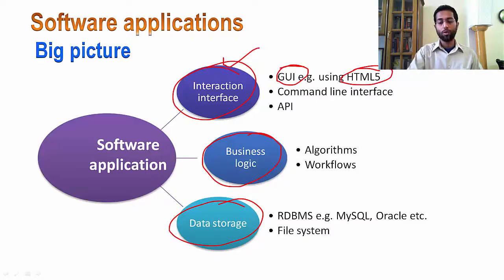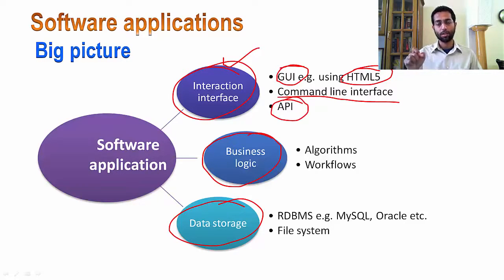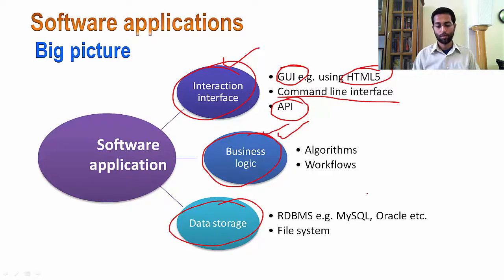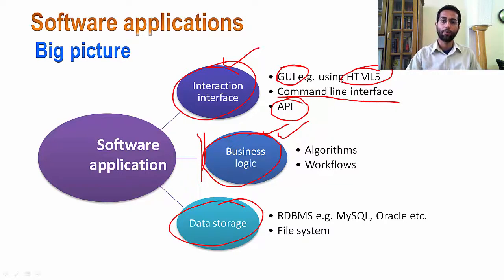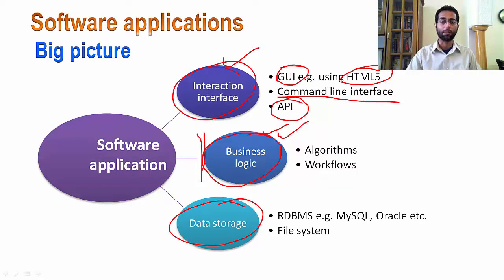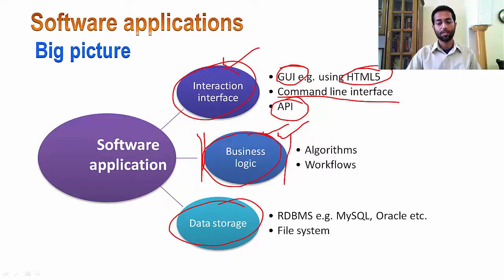Another way to interact with the application is through command line interfaces. Alternatively, if the application is offering some sort of service for programmatic consumption, then that interface is typically called an application programming interface. Business logic is the set of algorithmic steps which the application implements in some programming language in order to perform its tasks — expressed in a well-defined ordered sequence of steps.